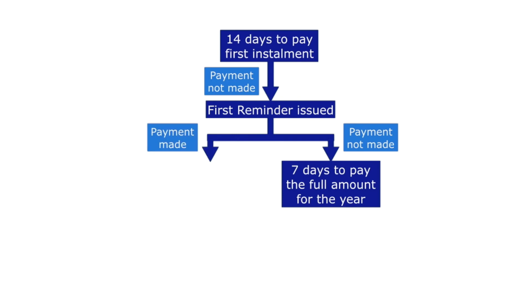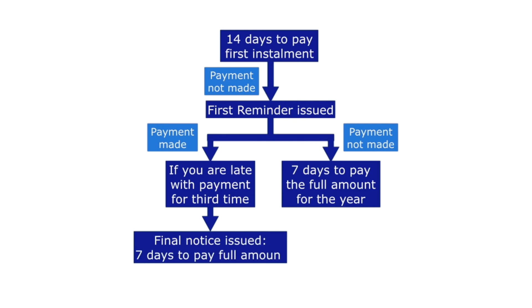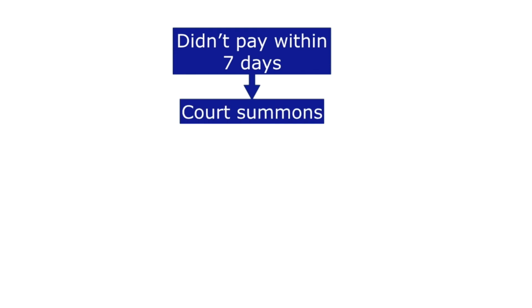However, if in one year of council tax you get issued with two reminder notices and fail to pay for the third time, you will lose the ability to pay by instalments. This means you may be issued with a final notice to pay the whole amount of council tax remaining for that year. A final notice will give you a 7-day deadline to make the payment and you will not be issued with any reminders. Once given a final notice, if you still fail to pay within 7 days, you will receive a court summons for the magistrate's court.